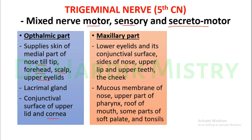The maxillary part supplies the lower eyelids and their conjunctival surface, sides of nose, upper lip, upper teeth, the cheek, mucous membrane of the nose, upper part of the pharynx, roof of the mouth, some parts of the soft palate, and tonsils.